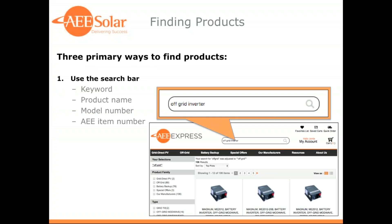First and foremost is finding the products that you need. There are really three ways to effectively search for products on AE Express. The first and most common would be to enter a search term in the search bar located in the header of the website. Here you can search by a keyword such as off-grid inverter or flooded battery, for instance.